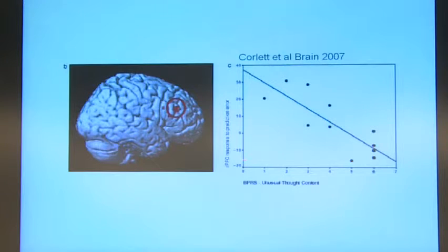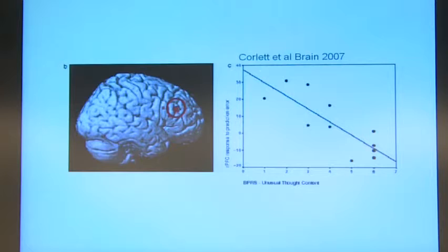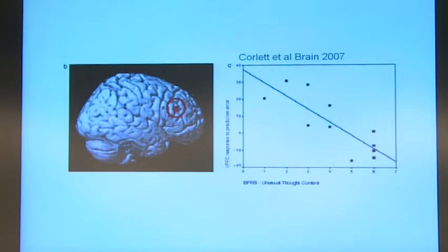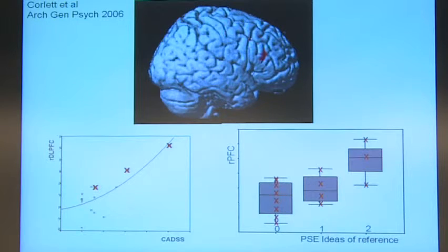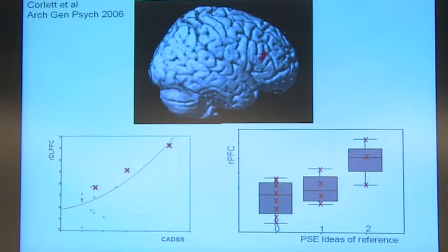Phil Corlett then looked at the patients again and correlated frontal activation to prediction error — compared to its control condition — with delusion-like thinking as measured by BPRS. He produced a fairly clear demarcation across this group of patients: those more prone to delusion-like beliefs were the ones who showed the least ability to distinguish in frontal cortex between what should be surprising and what shouldn't, suggesting that delusions correlate with a blurred prediction error signal. He also took the ketamine patients and raised the dose outside the scanner so they did experience some psychotic phenomena, and showed that this right frontal region was predictive of their dissociative experience and ideas of reference when given the high dose of ketamine.